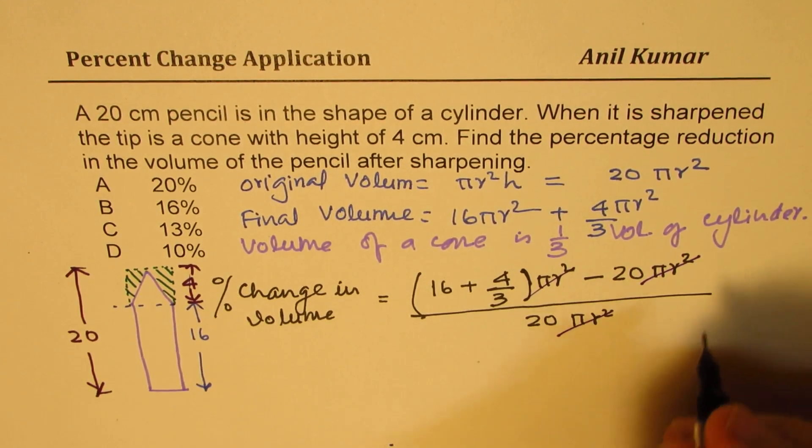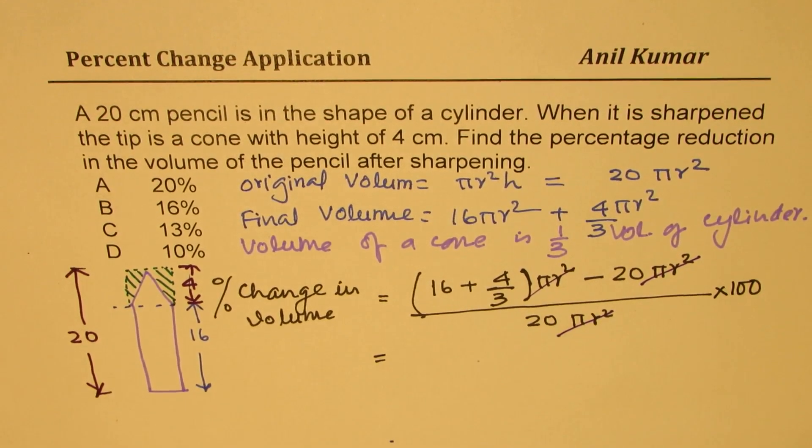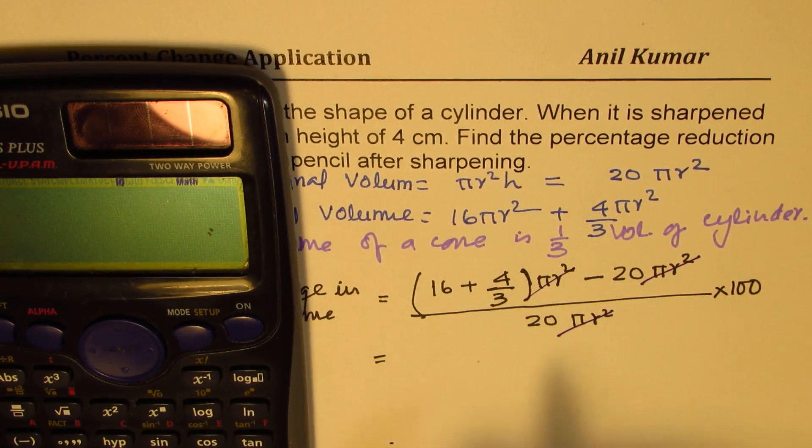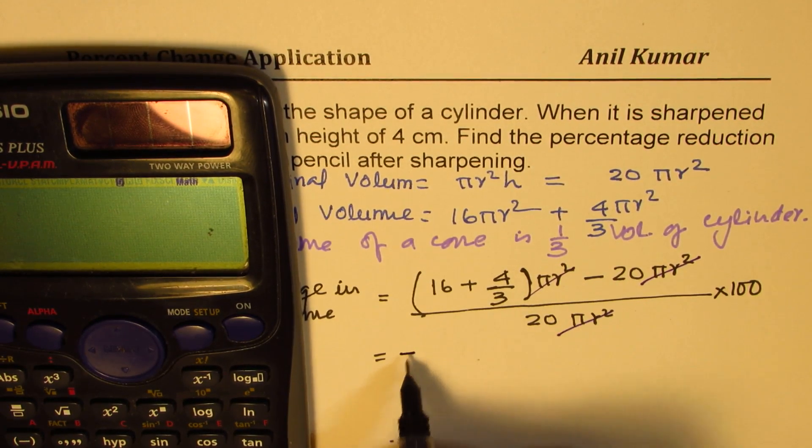We have to multiply this by 100 to get the percent change. So that gives you the solution. Some of you where the calculator is allowed, they can use the calculator. Obviously we are getting a negative answer because this is bigger. So the change is negative, it is decreasing.